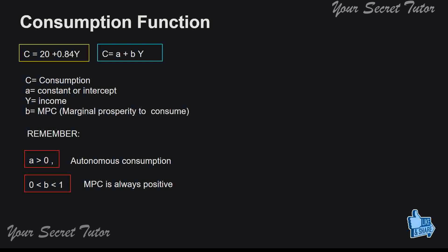Consumption is an increasing function — income increases and consumption increases. But why is B not equal to 1? If MPC is equal to 1, there will be no savings at all — in fact you would be spending more than what you are earning. According to the psychological law of consumption, MPC has to be less than 1 but greater than 0.